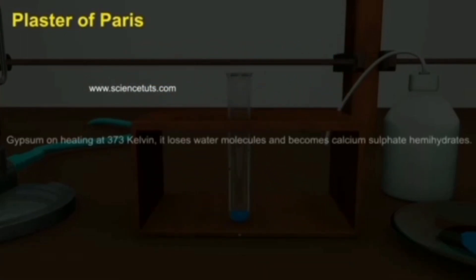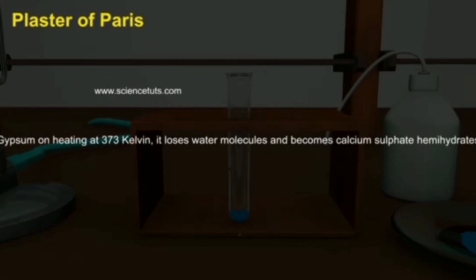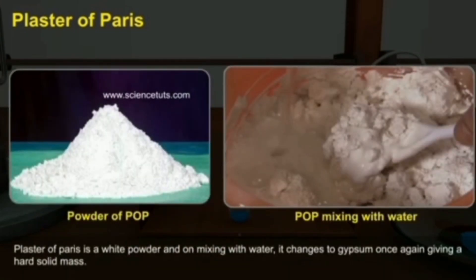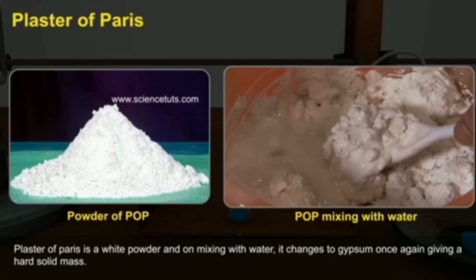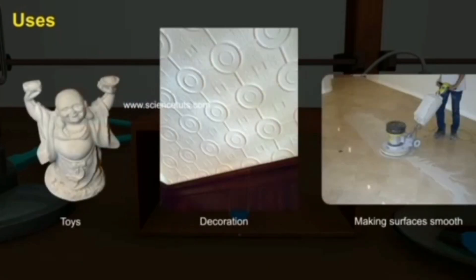Plaster of Paris: gypsum on heating at 373 K loses water molecules and becomes calcium sulphate hemihydrate. Plaster of Paris is a white powder — on mixing with water it changes back to gypsum, giving a hard solid mass. Uses of Plaster of Paris: used as plaster for supporting fractured bones in the correct position; used for making toys and decoration materials; and for making surfaces smooth.